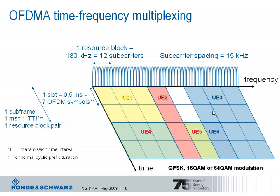There is also the notion of a slot, which is 0.5 milliseconds corresponding to seven OFDMA symbols. The slot was introduced because the downlink reference symbols — also called pilot symbols — are repeated every slot, which is why it is useful to have this notion. For resource assignment, however, the transmission time interval of one millisecond or subframe is the important part, as this defines the scheduling interval.